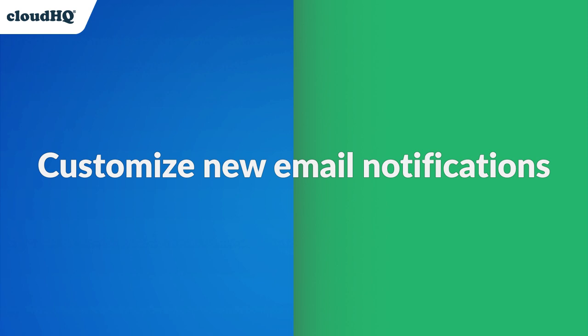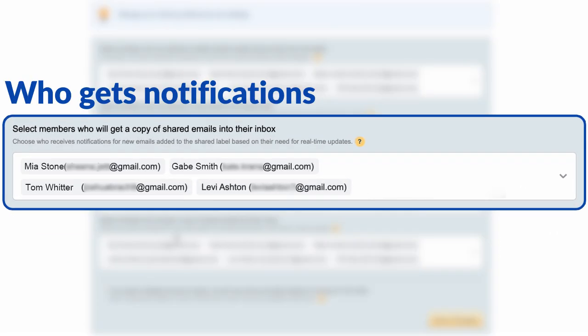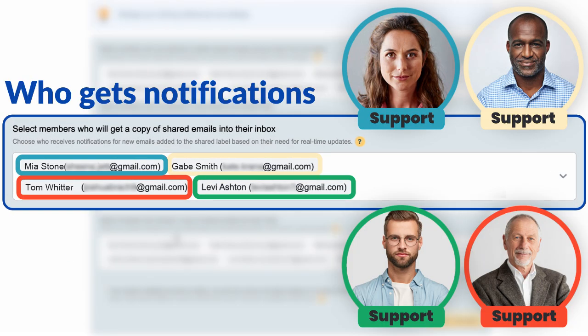And finally, you can now customize who gets notified when new emails arrive in the shared label. When your team needs real-time updates, but your managers need to stay focused on more important things, you can ensure everyone stays in the loop without being overwhelmed. Now everyone can easily collaborate and access the emails they need to contribute to their team's success.